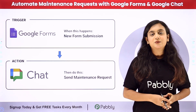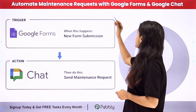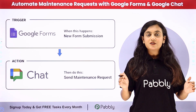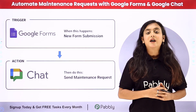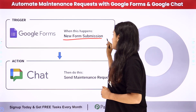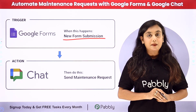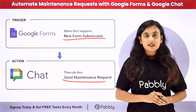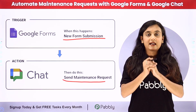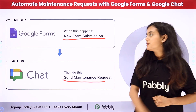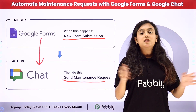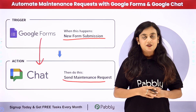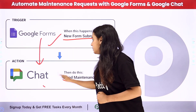Hello everyone, welcome back to Pabbly. In this video we are going to learn how to automate maintenance requests with Google Forms and Google Chat. I am an owner of a business and I have created a form for maintenance requests with the help of Google Forms. My objective is that whenever a new form submission is done by any of my employees regarding the maintenance request, I should automatically receive a message notification in my Google Chat space. For that, we are going to create an automation between Google Forms and Google Chat with the help of Pabbly Connect. Pabbly Connect runs on two concepts: trigger and action. In this process, my trigger application is Google Forms and my action application is Google Chat.